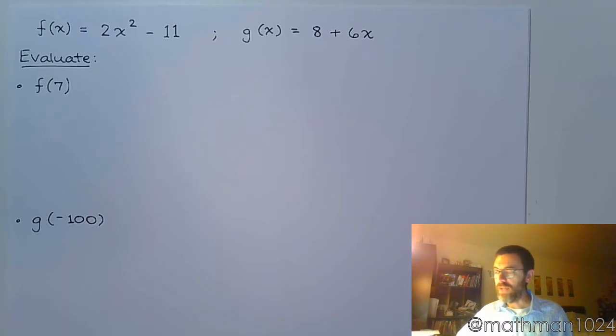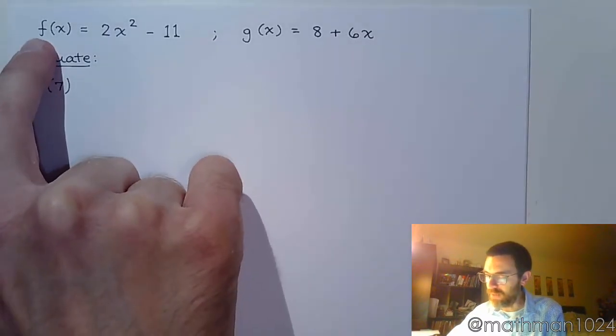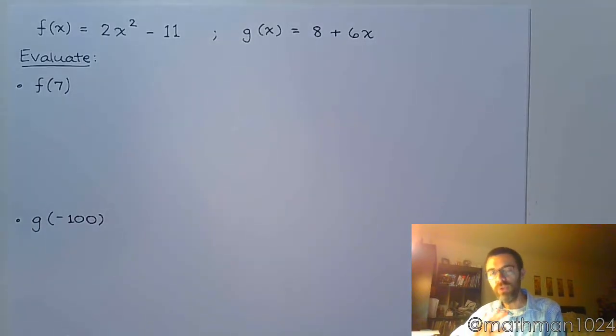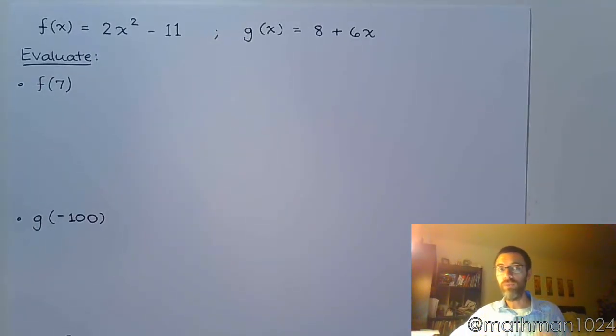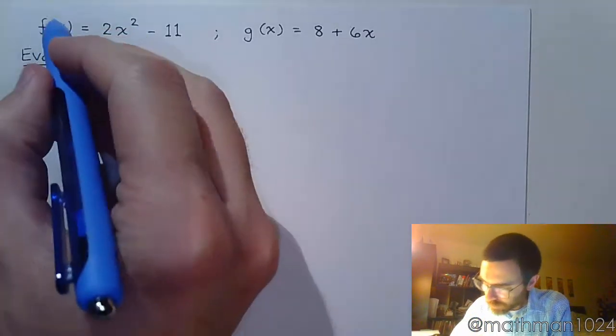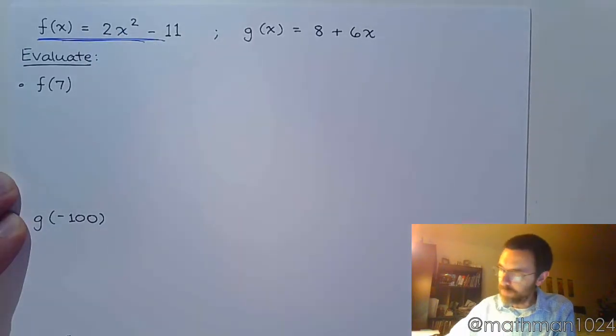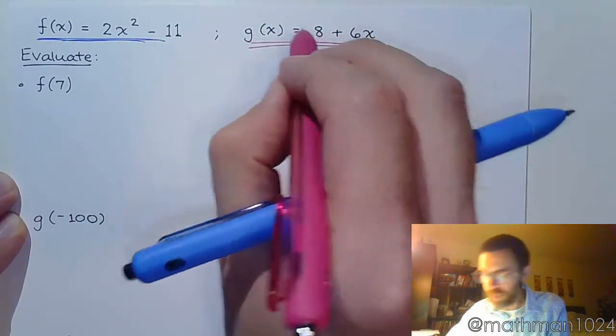Starting here with f of 7. Now I gave you two functions, I gave you f and g. Two different names, two different functions, two different rules. So starting with f of 7, that means we're going to take, I'm going to color code this. I'm going to make this guy my blue guy and I'm going to make g my pink one.